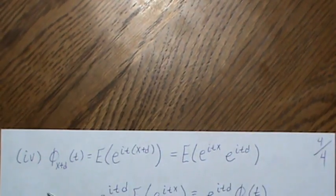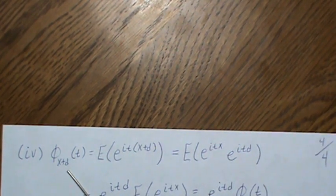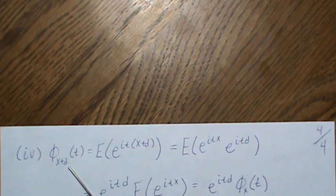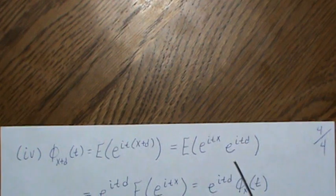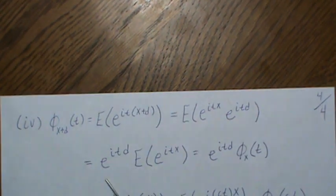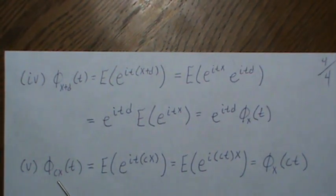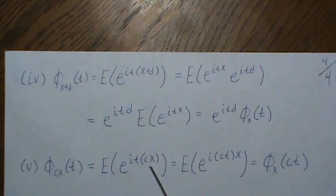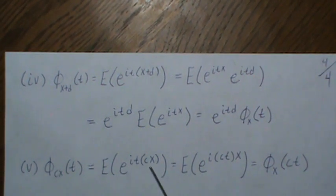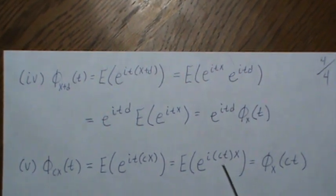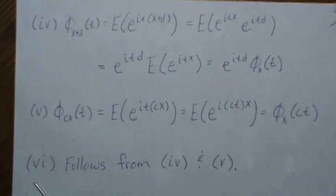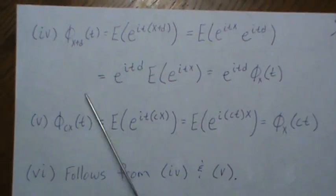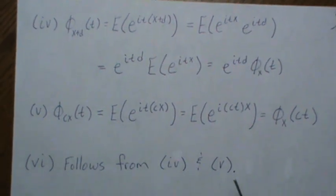For property four, the characteristic function of X + d, where d is a constant: by definition, φ_{X+d}(t) = E[e^{it(X+d)}] = e^{itd} · E[e^{itX}] = e^{itd} φ_X(t), since the constant comes outside the expectation. For cX, φ_{cX}(t) = E[e^{i(ct)X}] = φ_X(ct). Property six for the linear combination cx + d follows immediately from four and five, so I'll skip that in the interest of time.